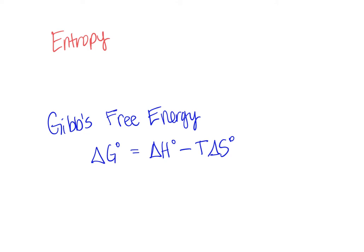So besides enthalpy delta H, we also talked about entropy delta S. So bad definition of entropy is the amount of disorder in a system. Better definition is the different number of arrangements that a molecule can have. So different energies or different spatial orientations. So the more possibilities, the greater the entropy.